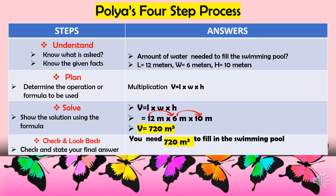Moving to Plan: the operation to use is multiplication, and the formula is V = L × W × H. For the Solve step, substituting the given facts: length = 12 m, width = 6 m, height = 10 m. Multiplying 12 × 6 × 10 gives a volume of 720 cubic meters. Finally, Check and Look Back: the answer is that you need 720 cubic meters of water to fill the swimming pool.